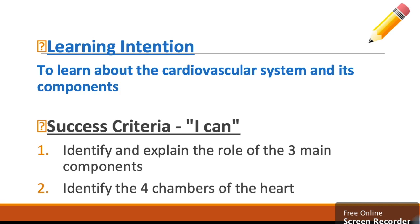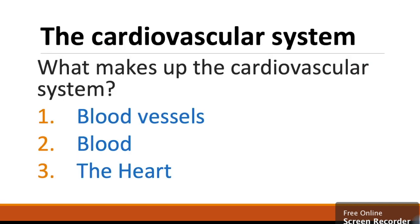Our success criteria: I can identify and explain the role of the three main components, and I can identify the four chambers of the heart. So, what makes up the cardiovascular system? There are three components: we have blood vessels, blood, and the heart. Let's have a deeper dive into these.